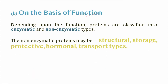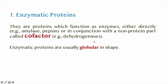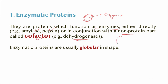On the basis of function, proteins can be classified into enzymatic and non-enzymatic. Non-enzymatic proteins can be structural, storage, protective, hormonal, or transport. Enzymatic proteins are those which function as enzymes — either directly (for example, amylase and pepsin, where protein alone functions as an enzyme) or in conjunction with a non-protein part known as a cofactor (for example, dehydrogenases). Enzymatic proteins are usually globular in shape.